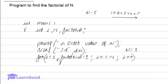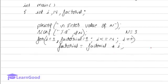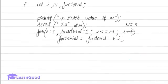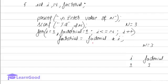Inside this loop, the statement is: factorial equals factorial into i. Here i is initialized to 1 and factorial is also initialized to 1. Assuming n equals 3: i is 1, factorial is 1. Since 1 is less than or equal to 3, the condition is true. It executes the statement: factorial equals factorial into i, which is 1 into 1, so factorial remains 1.